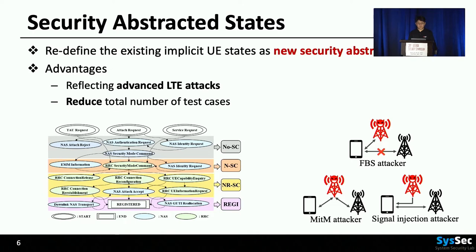UE and network behave differently depending on the message authentication status of UE, and the security context is established based on the status. While establishing an LTE connection, UE needs to have security context in NAS layer first and then RRC layer. Therefore, there are four states. This definition has two advantages: first, they can reflect two new attacker models — a man-in-the-middle attacker and a signal injection attacker. Secondly, states in one layer are equivalent in terms of security, and therefore we may be able to reduce test cases.